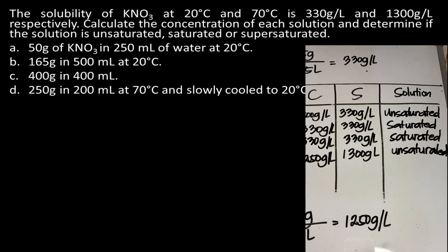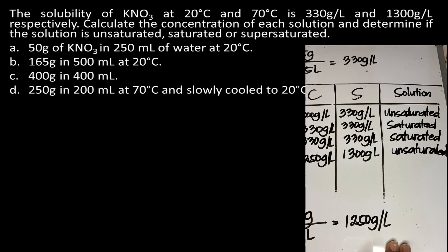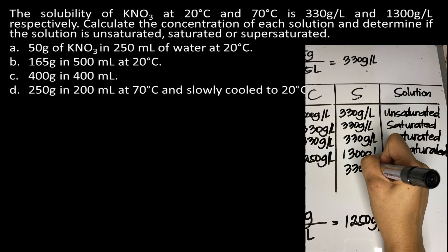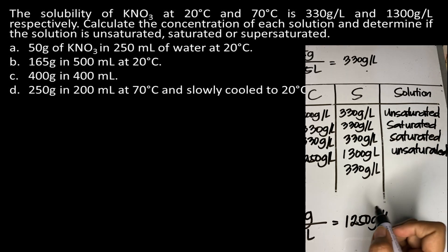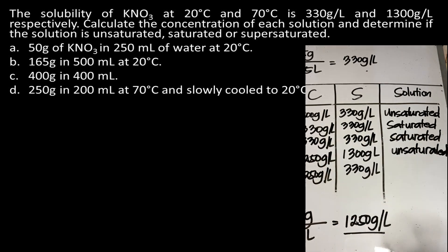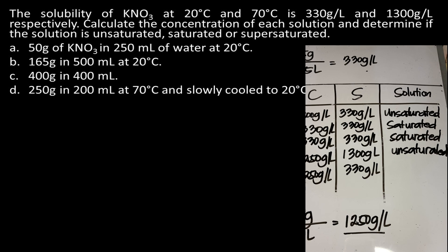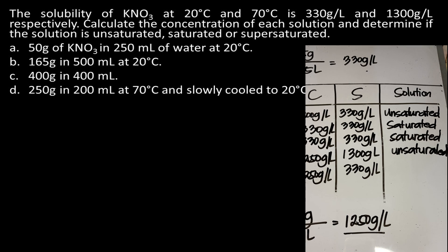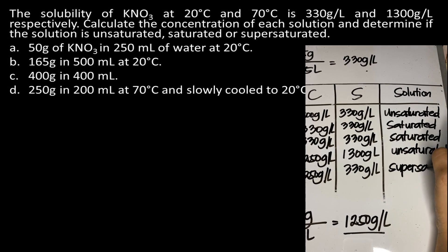Now we cool the solution down to 20 degrees Celsius. As temperature decreases, solubility decreases — back to 330 grams per liter. However, we still have 1,250 grams per liter dissolved in the solution. Since concentration is now greater than solubility, we have a supersaturated solution. That's all for today — I hope you learned something new. Goodbye and God bless!